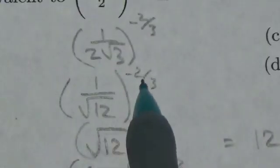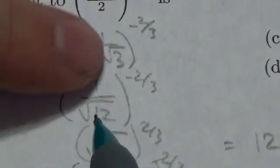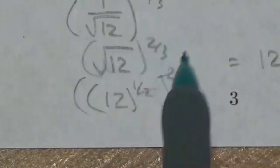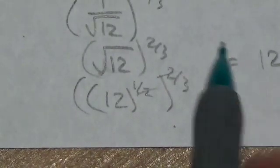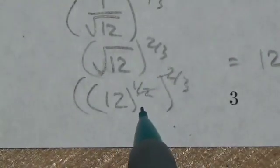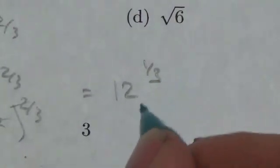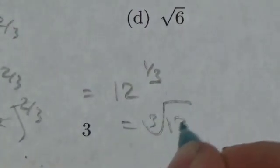That negative caused this fraction to reciprocate, so the root 12 jumped into the numerator. It's awkward to work with a radical to a rational exponent, so I changed it to a fractional exponent and multiplied the powers together. That simplifies to 12 to the 1 third, which is just the cube root of 12. So the answer is C.